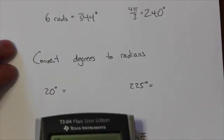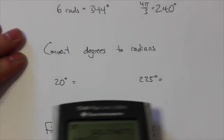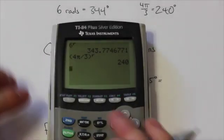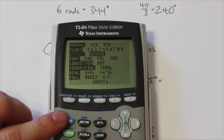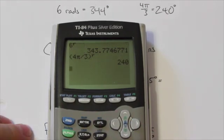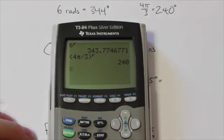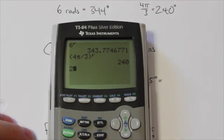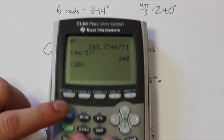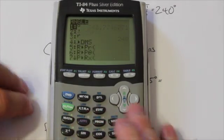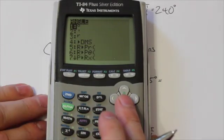This works the other way as well — we can convert a degree measure to radians. What we need to make sure is that we are in radian mode; we need to be in the mode that we're converting to. So I'm going to put 20 in brackets, then go back into my angle menu, which is 2nd Apps.